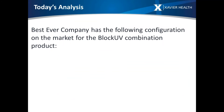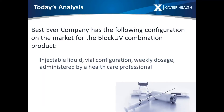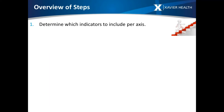For today's analysis, we're going to have a fictitious product. Best Ever Company has the following configuration on the market for the Block UV combination product: it's an injectable liquid vial configuration, weekly dosage, administered by a healthcare professional. There are multiple steps in setting up the heat map, and I'm going to walk you through each one and how to do the calculations — this will be a great tool to come back and review as you do this in your own company.